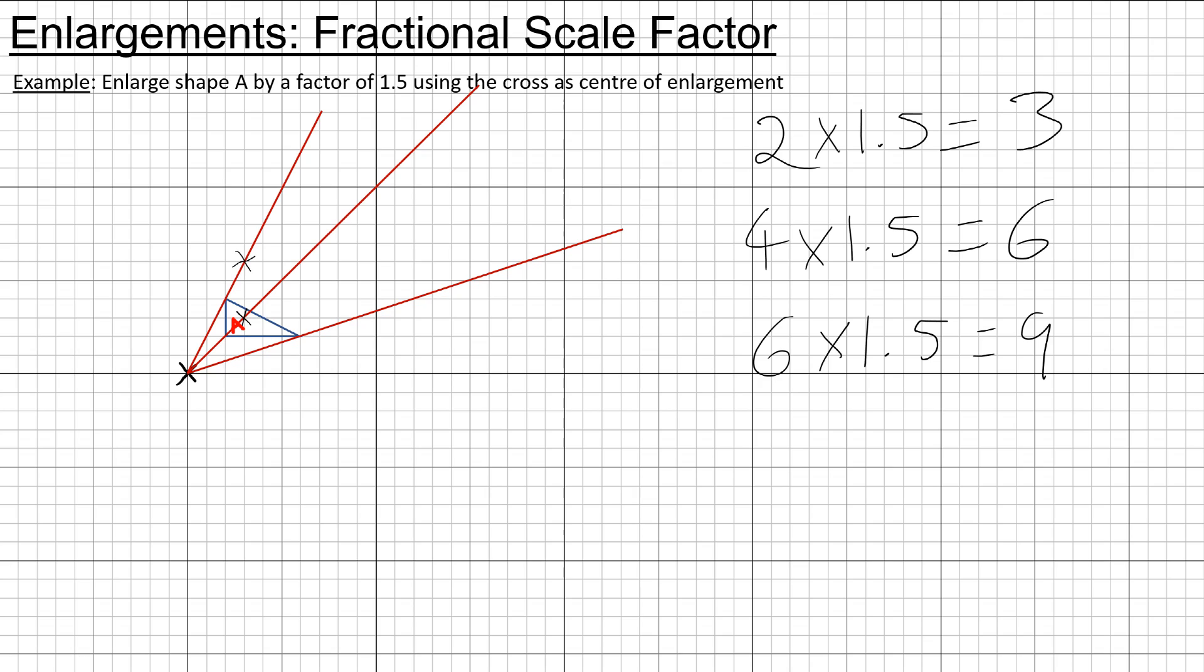Similarly, to get to the last point I need to go across by 6. 6 times 1.5 is 9, so I need to go across by 9 and I need to go up by 3. I now need to join up my points to form my shape.